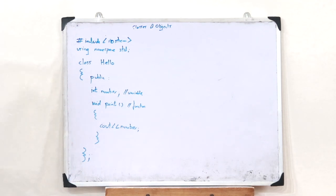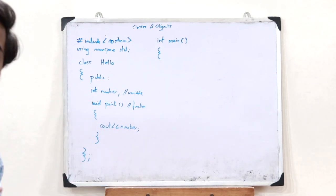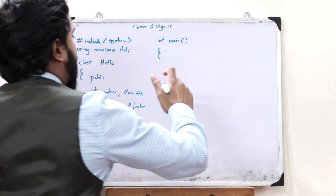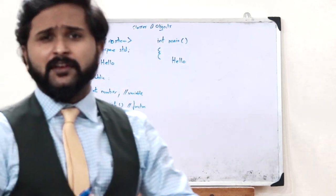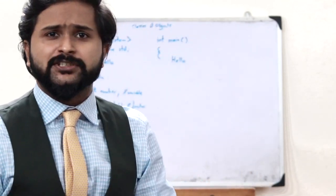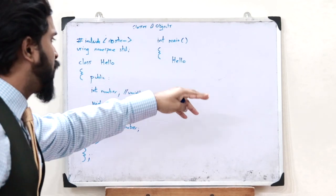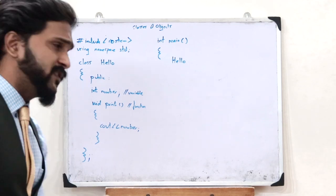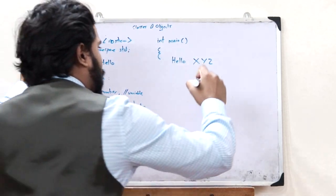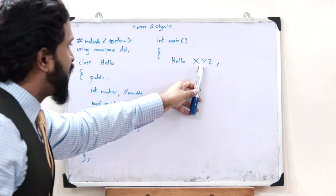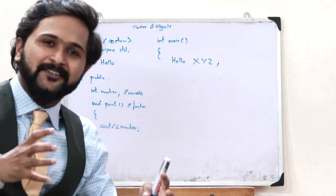Now we go into the main program: 'int main'. Inside main, we declare an object of the class Hello. We write the class name 'Hello' followed by the object name — let's say 'xyz'. So 'Hello xyz' creates an object named xyz. This object will have both the variable 'number' and the function 'print' inside it — that is the beauty of classes.